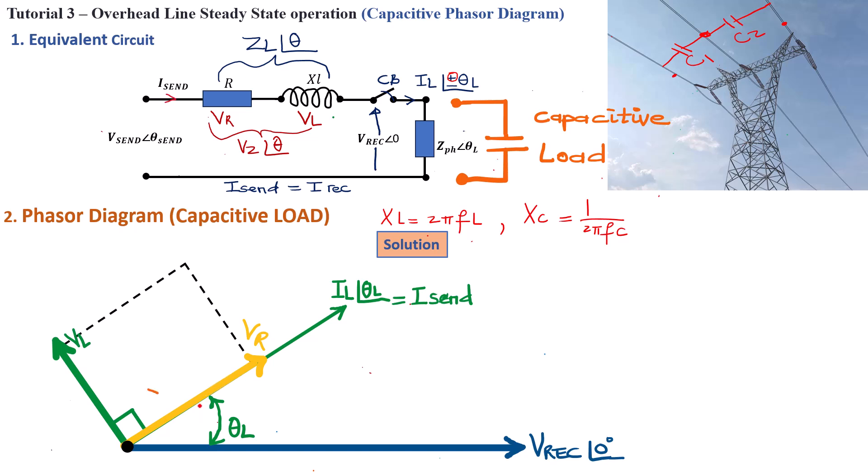And this voltage drop has an angle, θZ, that we can actually calculate and reference here to draw the phasor of VZ at θZ. So this now will be VZ, basically the voltage drop across the transmission line.